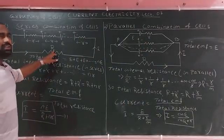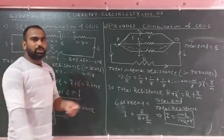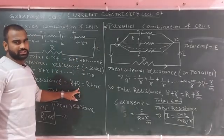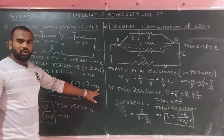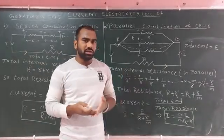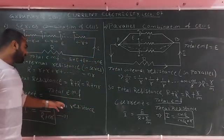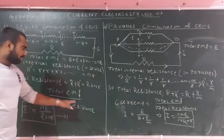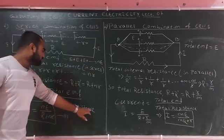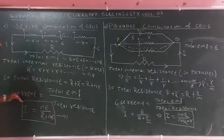The total resistance in the circuit is external resistance R plus total internal resistance nR. By Ohm's law, V equals IR, so current I equals total EMF divided by total resistance. Therefore, I equals nE divided by (R plus nR). This is the current formula for series combination of cells.